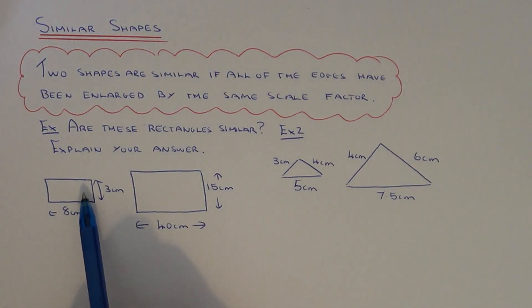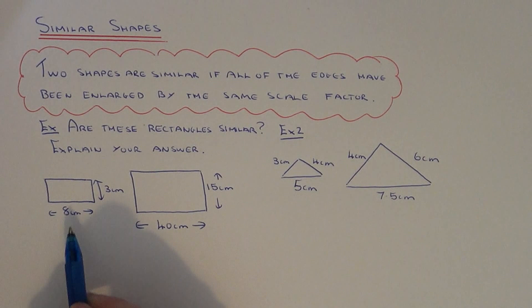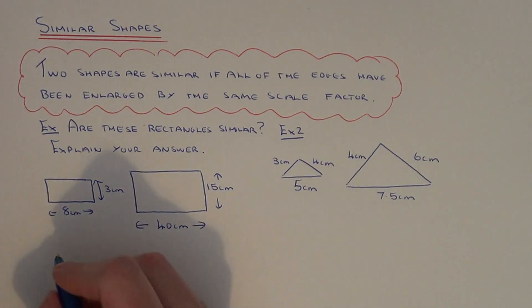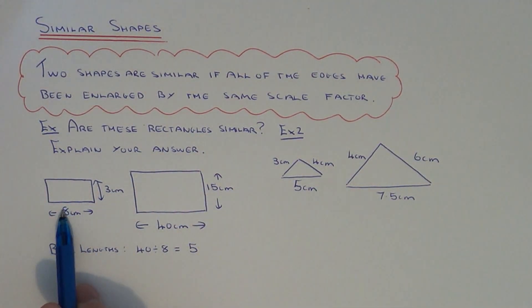In example one we've got two rectangles: an 8 by 3 rectangle and a 40 by 15. If we divide the base lengths of the rectangles we get 40 divided by 8, which gives us 5. So the base lengths have been enlarged by a scale factor times 5.